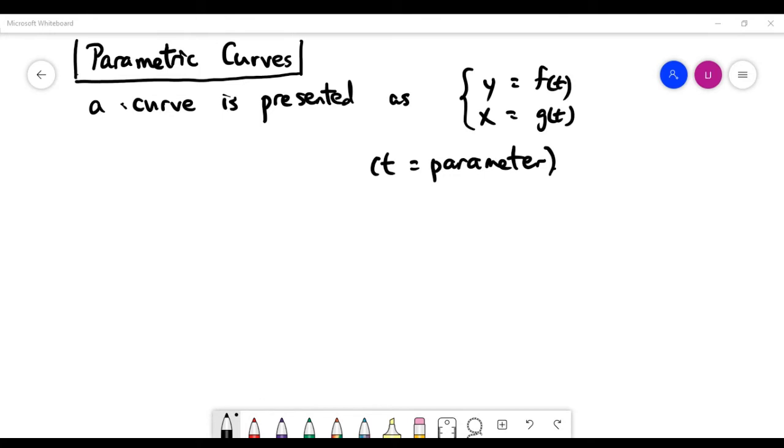Sometimes we have to use what we call parametric curves, in the sense that the y-coordinate and x-coordinate of the point are both functions of a certain t. You can call t the parameter, and that's how the name parametric curves comes from.